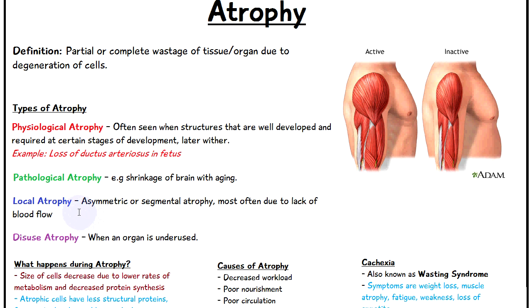Local atrophy is another type where we have either asymmetric or segmental atrophy, and it's most often due to lack of blood flow. So we have atrophy in a certain region of the body, often due to poor circulation.